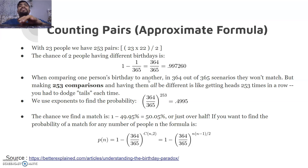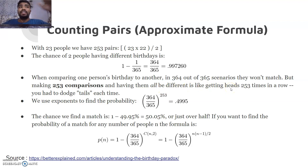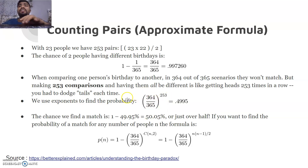In any single comparison, 364 out of 365 scenarios result in different birthdays. But making 253 comparisons and having them all be different is like flipping a coin 253 times and always getting heads — a huge task. Using exponents, the probability of all 253 pairs having different birthdays is (364/365)^253 ≈ 0.4995. So the probability of a match is 1 − 0.4995 = 0.5005, meaning a greater than 50% chance.